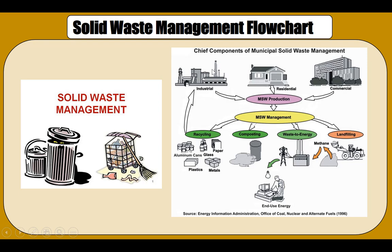Now that you know the types of waste produced and the choices for what to do with it, here is what is actually done. Waste gets generated in residential, industrial, and commercial areas, and all of this combined is known as municipal solid waste. In terms of management, recycling, composting, incineration or waste-to-energy production, and landfilling are the four main ways we are managing our waste, and as you can see a lot of our waste still goes to landfilling.